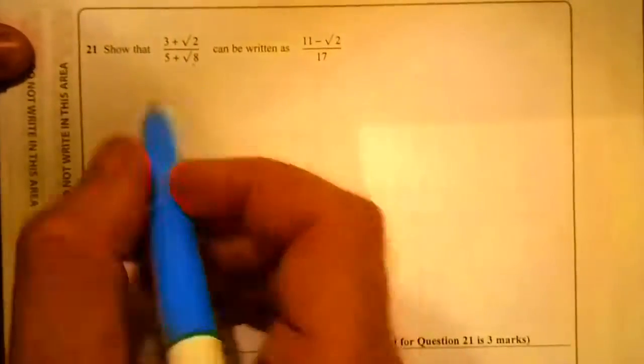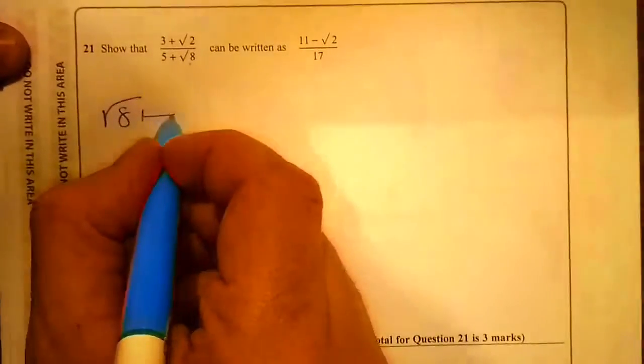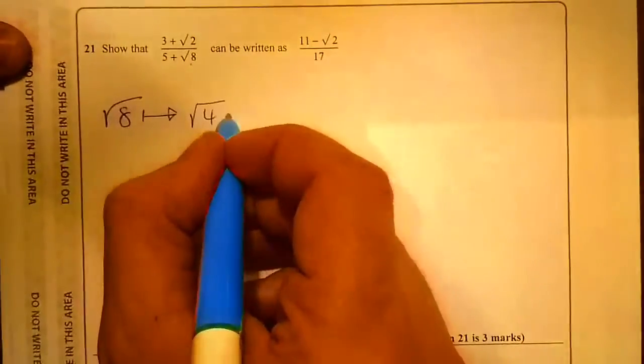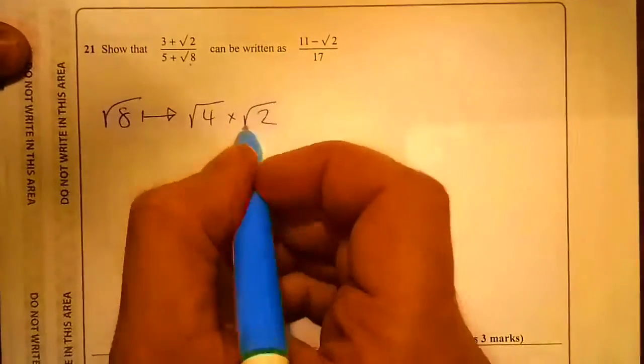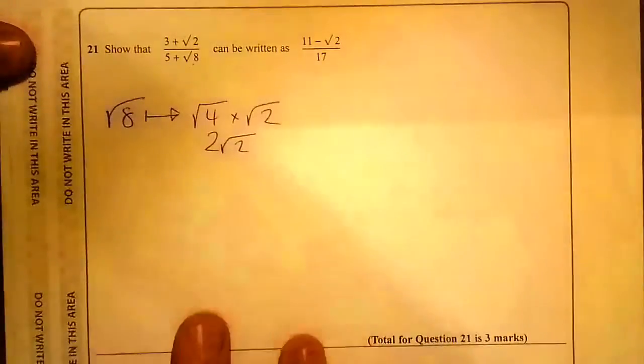The first thing to note is the √8 here. √8 is not in its simplest form. I can turn that into √4 × √2. √4 we know is 2, so I can change that into 2√2.